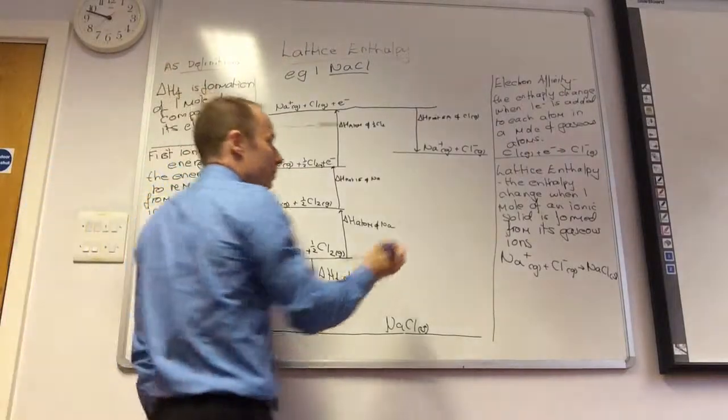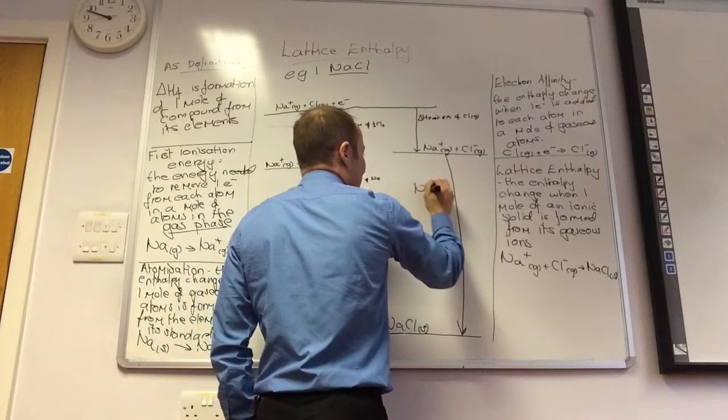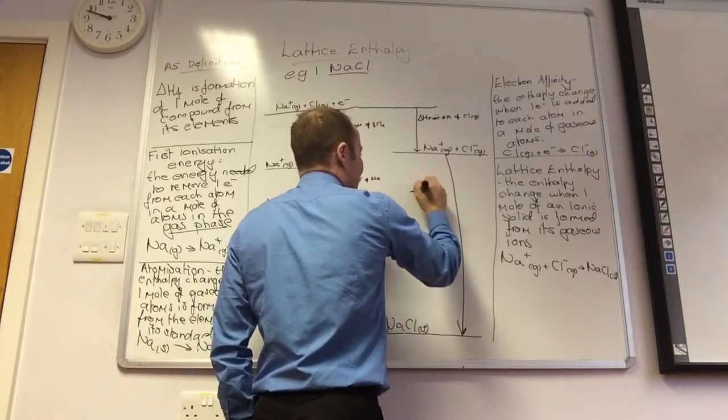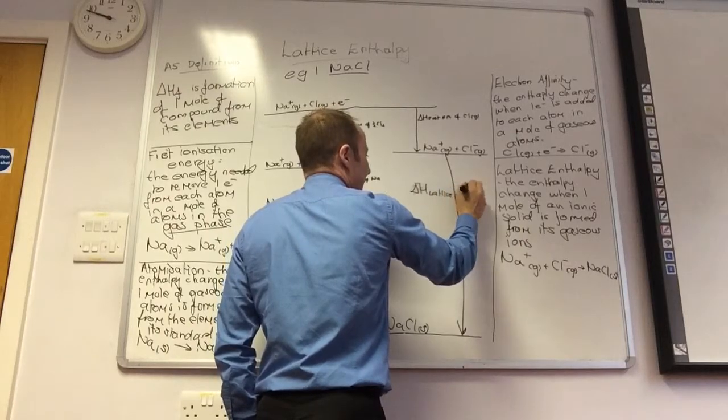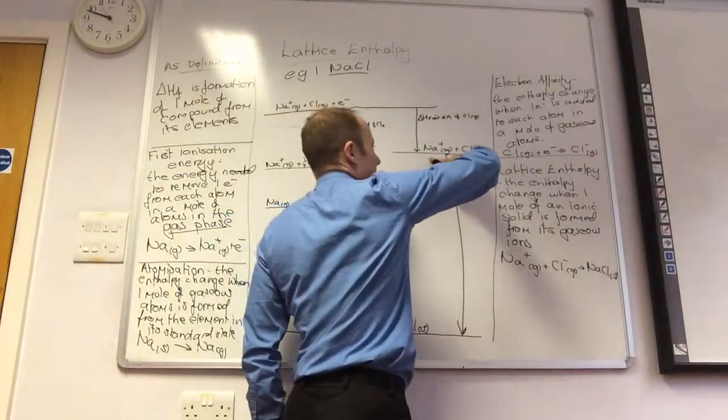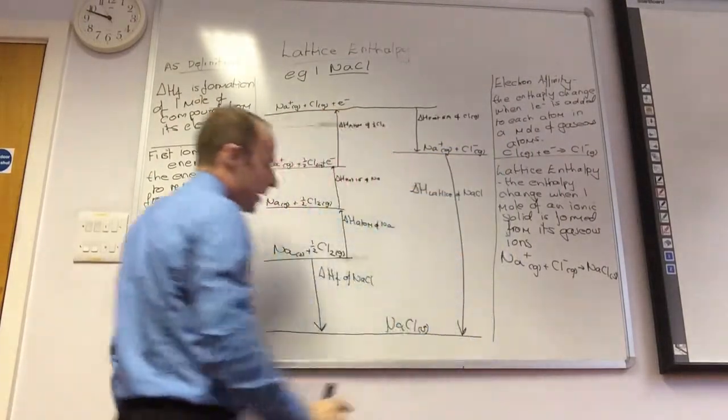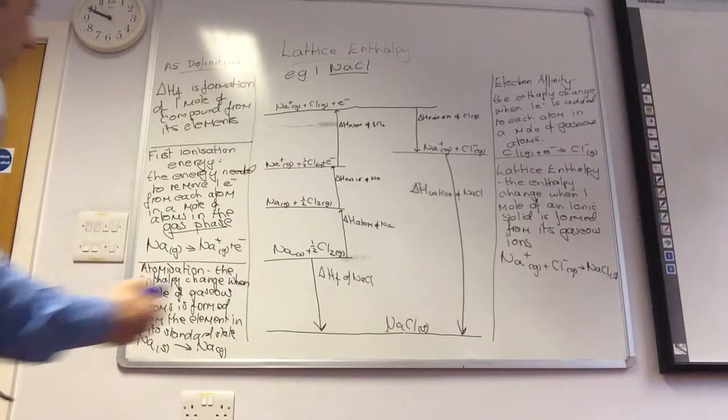And this bit here, that's delta H lattice of NaCl, taking the ions in the gaseous state to become the ionic solid.